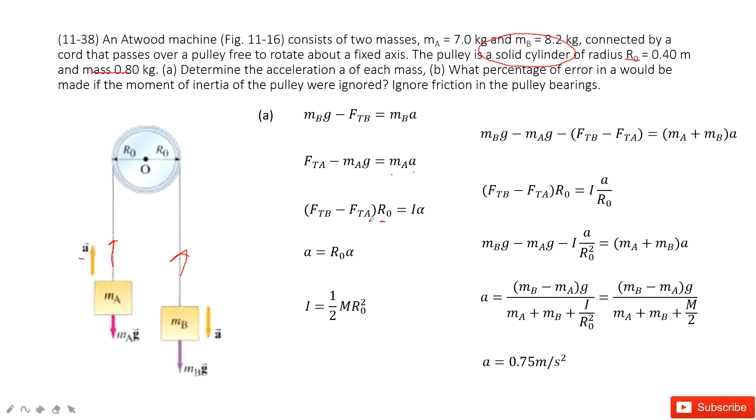The net torque is force times the distance R0, and equal to I times alpha. I is moment of inertia, alpha is angular acceleration.